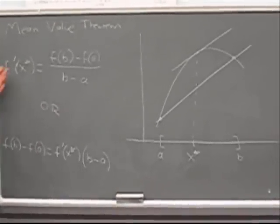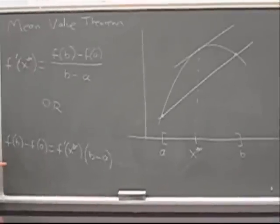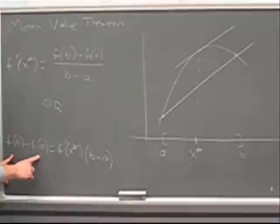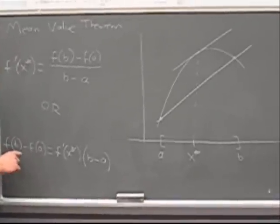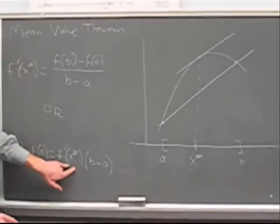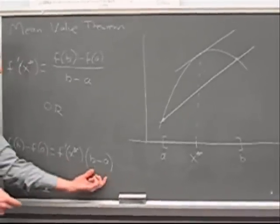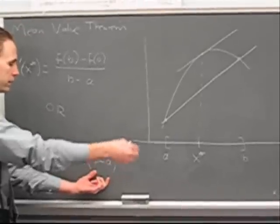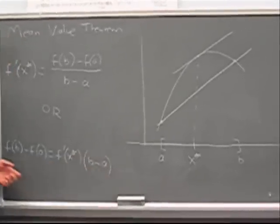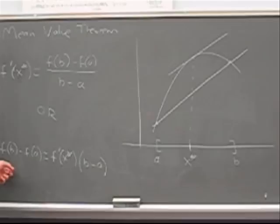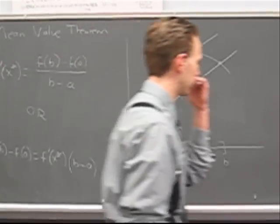In another way, it could be stated this way: that the total change of the function from start to finish is equal to the derivative at some point times the distance between the endpoints. We're not going to use that right now, but it's going to pop up later when we do integration.